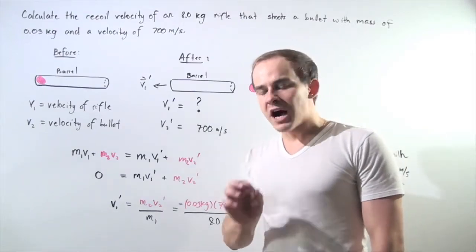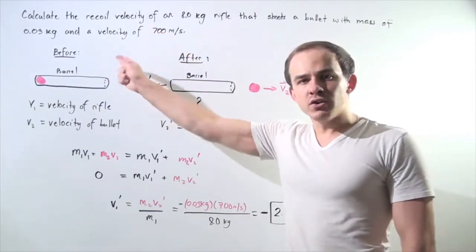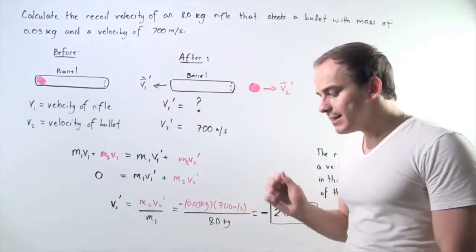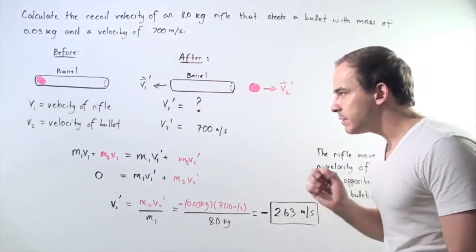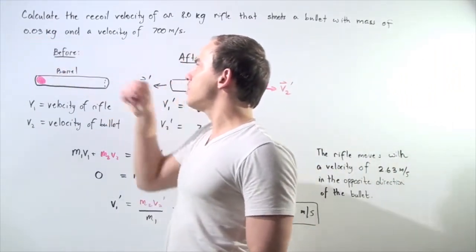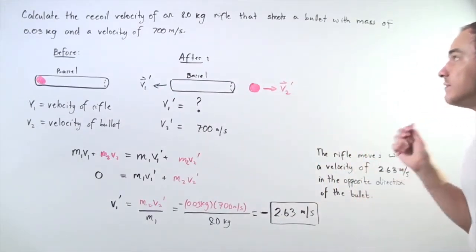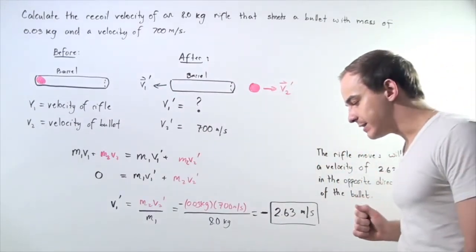Let's use the law of conservation of momentum to calculate the recoil velocity of an 8 kilogram rifle that is capable of shooting a bullet with a mass of 0.03 kilograms and a velocity of 700 meters per second.